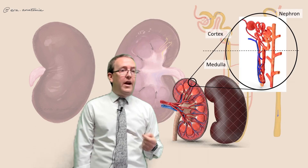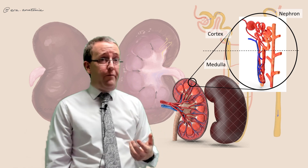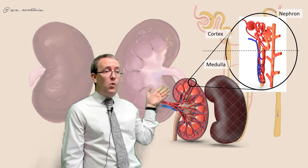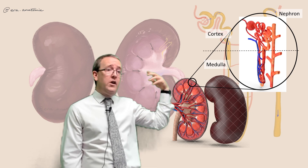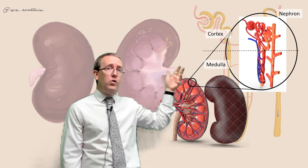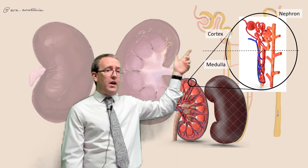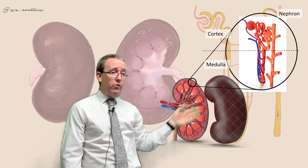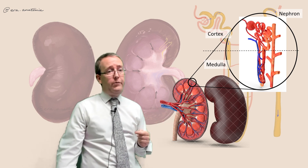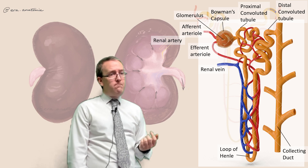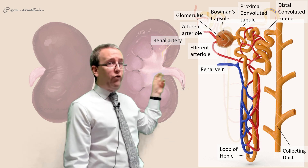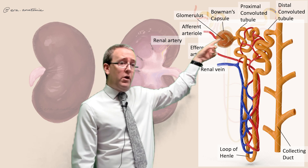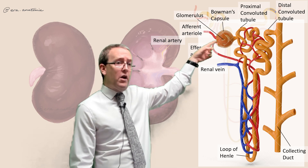If we look even closer into a little part of the cortex, in the cortex you've got millions and millions of these little filters called the nephron, and nephrons are where the filtration actually happens. They're orientated with the top bit pointing outward — which we're going to learn is the glomerulus, the Bowman's capsule, and the proximal and distal convoluted tubules. The loop of Henle dips back into the medulla. The renal artery gets smaller and smaller until it reaches one individual nephron, and that branch is called the afferent arteriole.